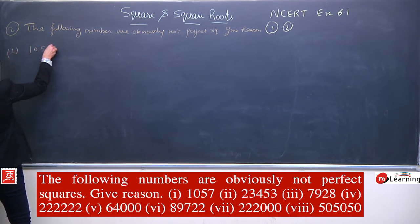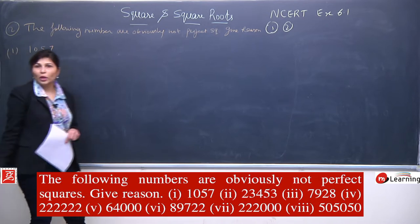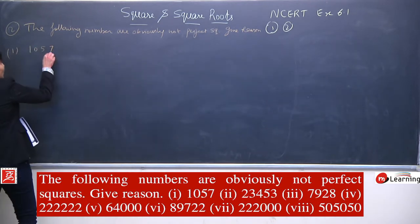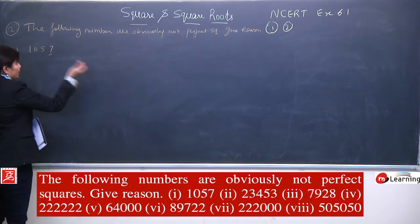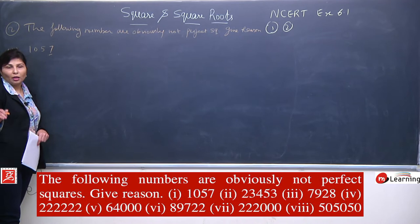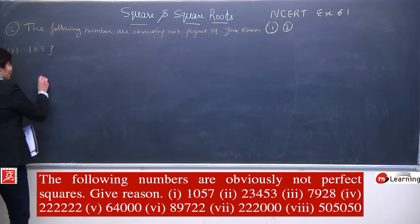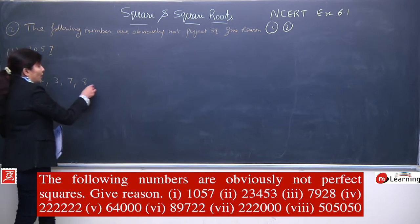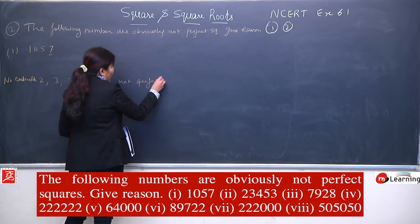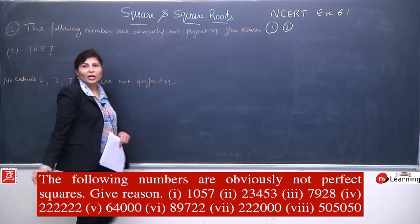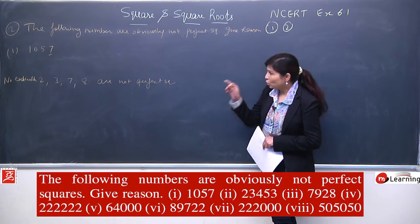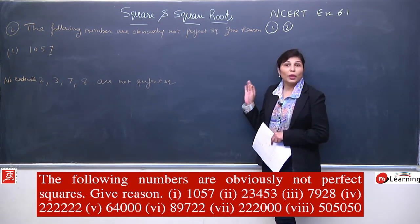First example is 1057. We don't need to find its square or square root — we only need to judge whether it will be a perfect square or not. We look at the last digit, meaning the unit digit. Checking from the right, the unit digit is 7. The property we already studied: numbers ending with 2, 3, 7, or 8 are not perfect squares.